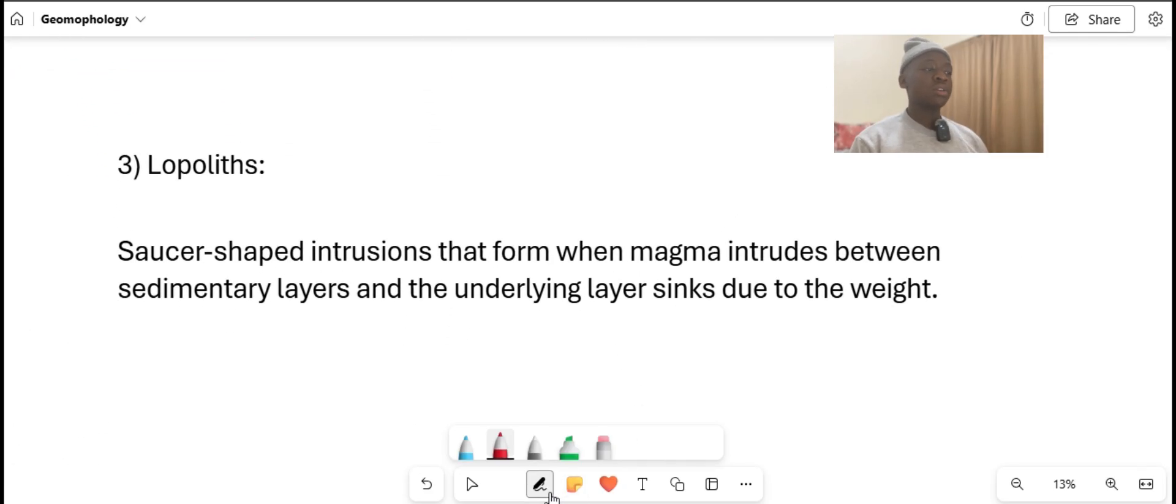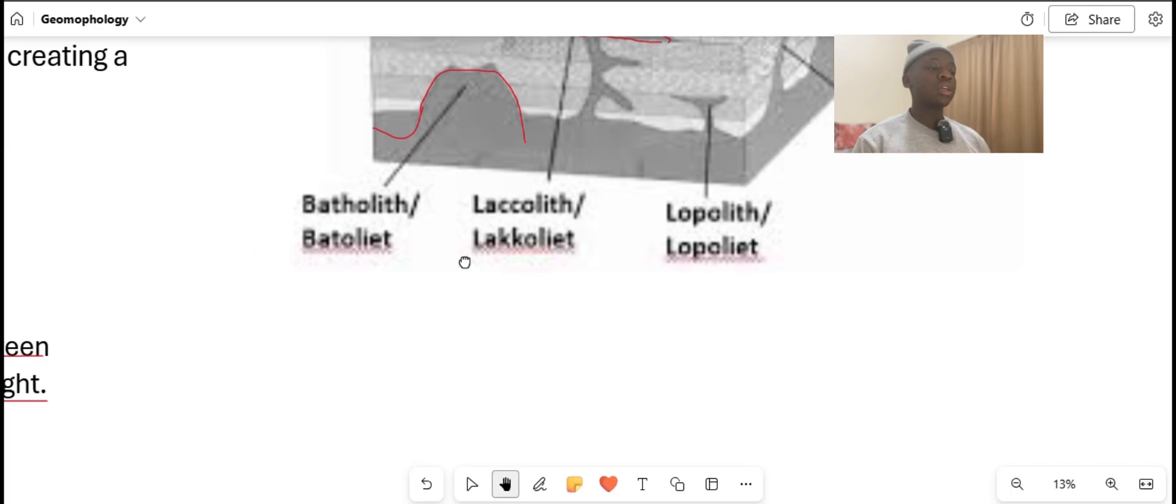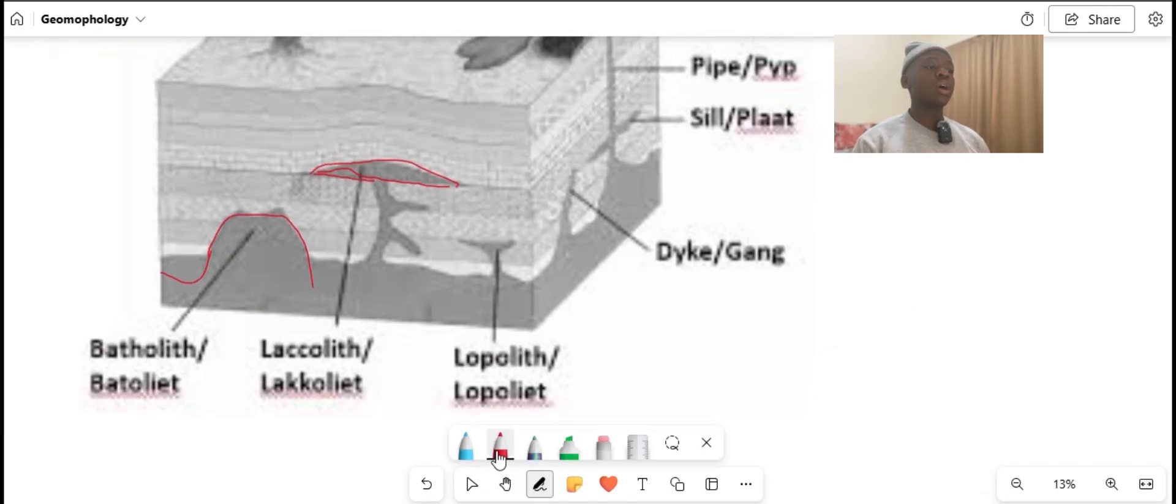The last type of igneous intrusive rock is the lopolith. There are saucer-shaped intrusions that form when magma intrudes between the sedimentary layers and the underlying layer sinks due to their weight.